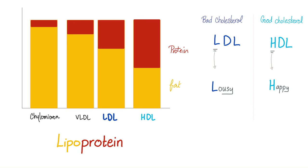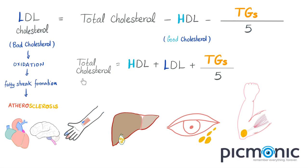High-density of what? High-density of protein. Now, if you are a patient with hyperlipidemia, which one of these four is your friend? Of course, the one that has the least amount of fat, i.e., the HDL. That's why we call HDL the good cholesterol — H for happy — but LDL is the bad cholesterol, L is lousy. In the following Picmonics, you will see HDL as an angel and LDL as the devil. Total cholesterol equals HDL plus LDL plus triglycerides over 5.